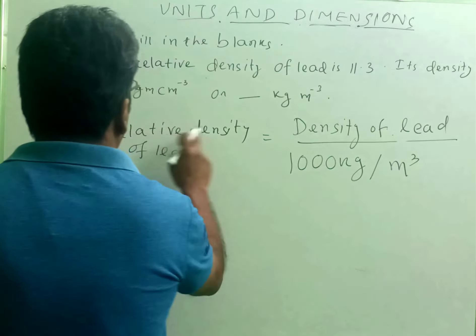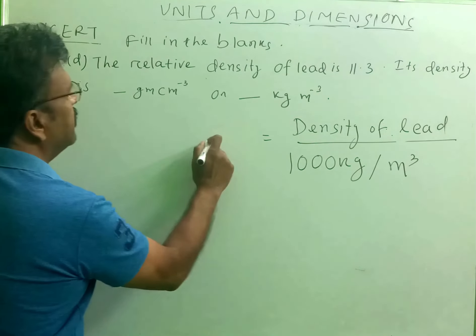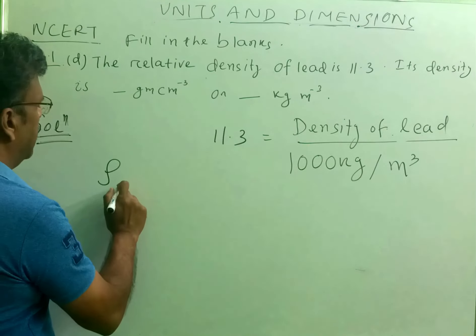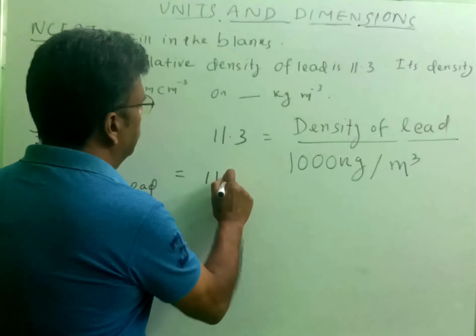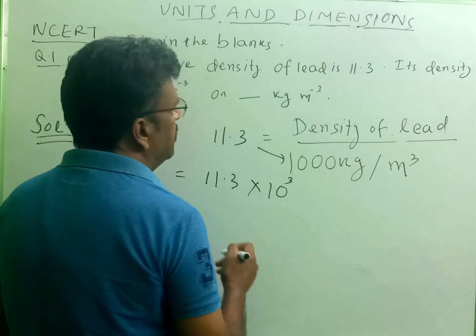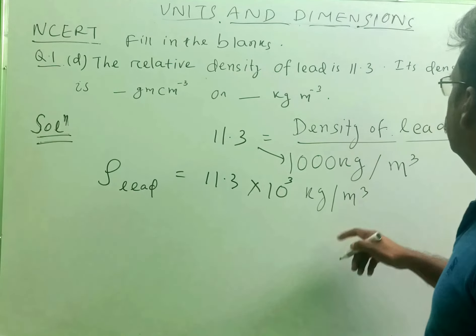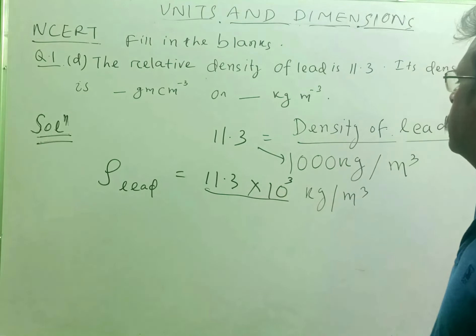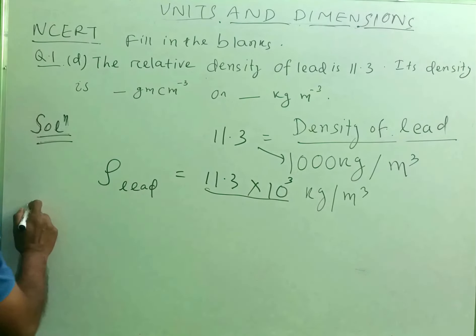Then what will be the density of lead? The relative density of lead is given as 11.3. So the density of lead, denoted by the symbol rho, is equal to 11.3 multiplied by 10 to the power 3 kg per meter cube. We found this blank — we will fill it with 11.3 × 10³ kg per meter cube.